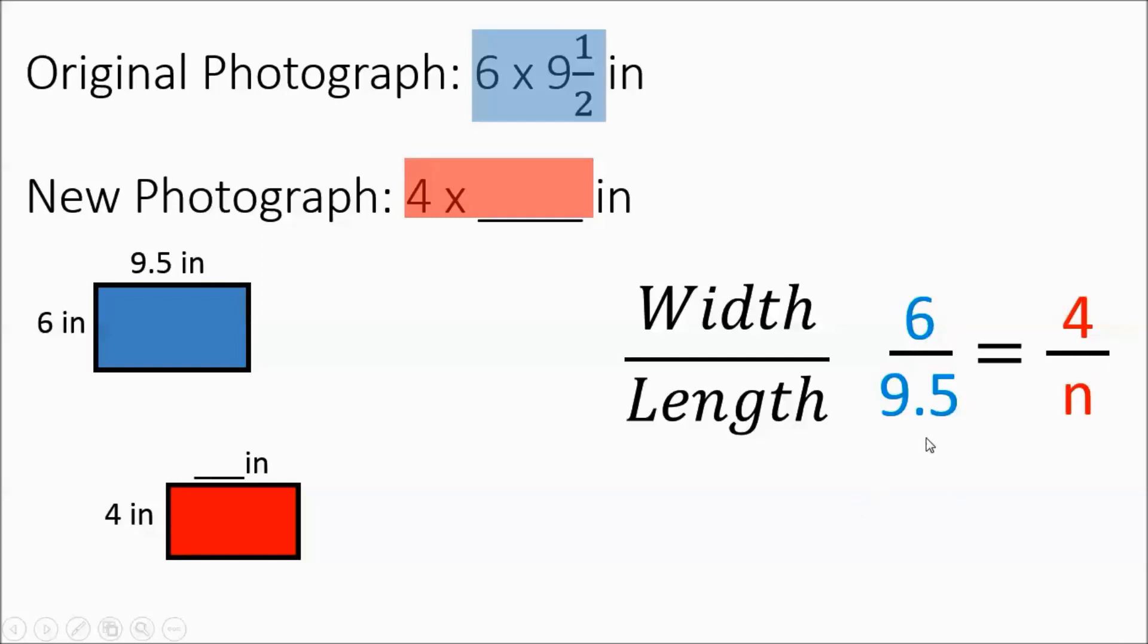Now we apply our cross product rule. 6n equals whatever 9.5 times 4 is. This ends up being 38. So then you'll divide both sides by 6 and you get 6.3 repeating. Hopefully you have memorized that 6.3 repeating is going to be a third.